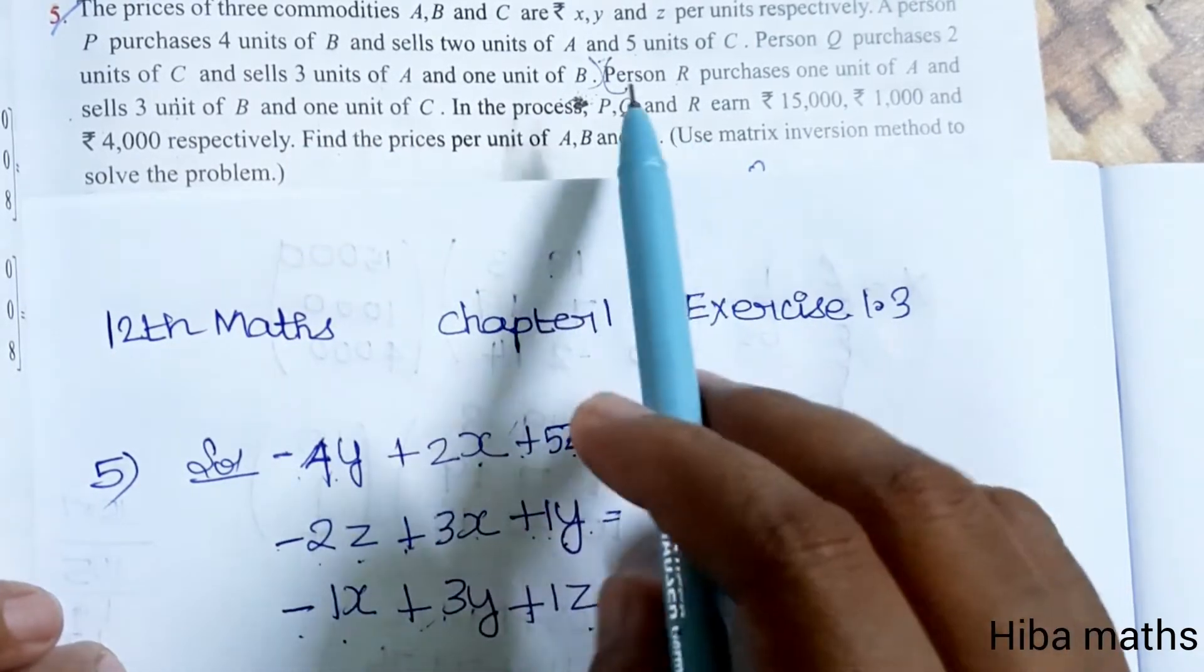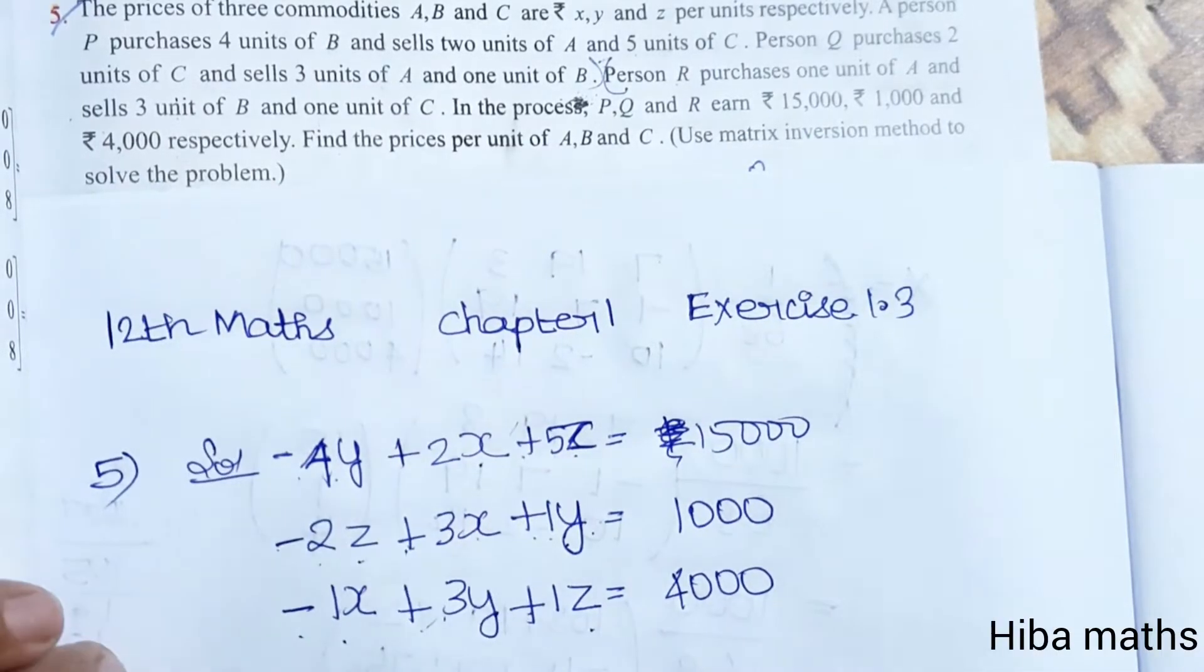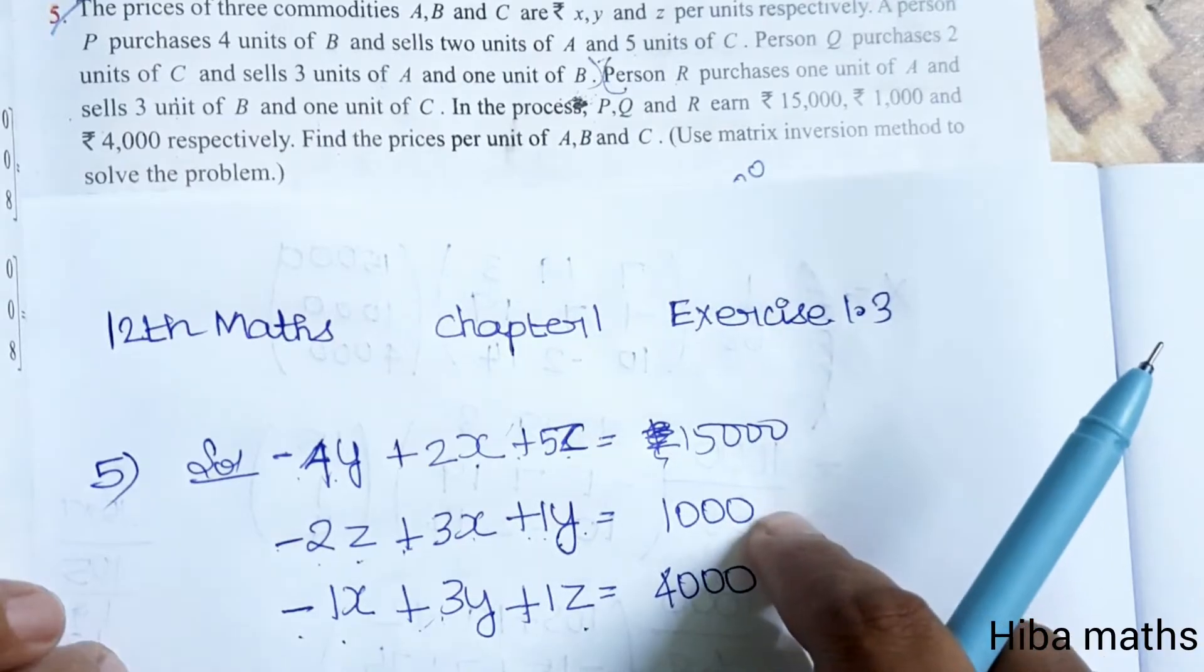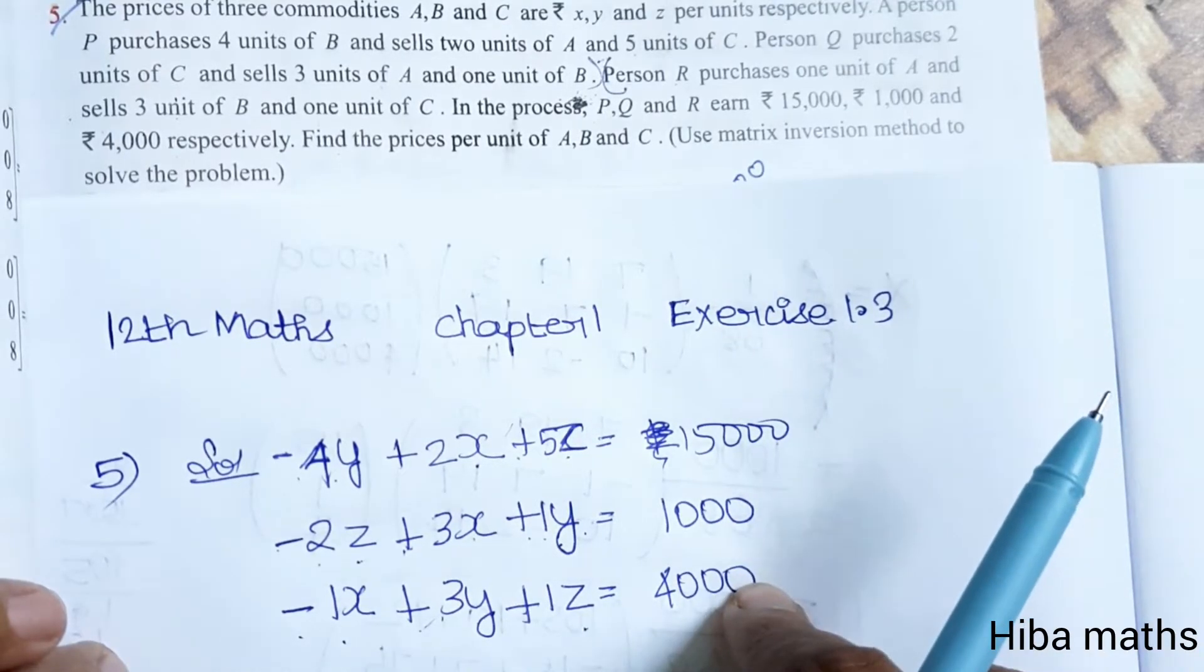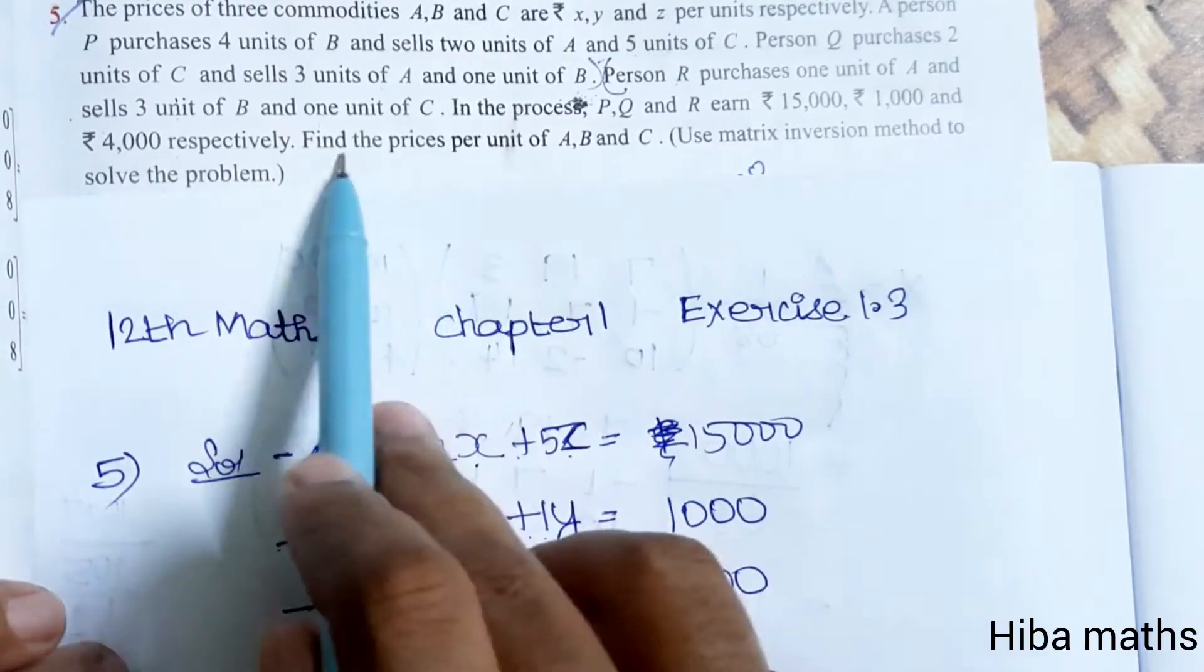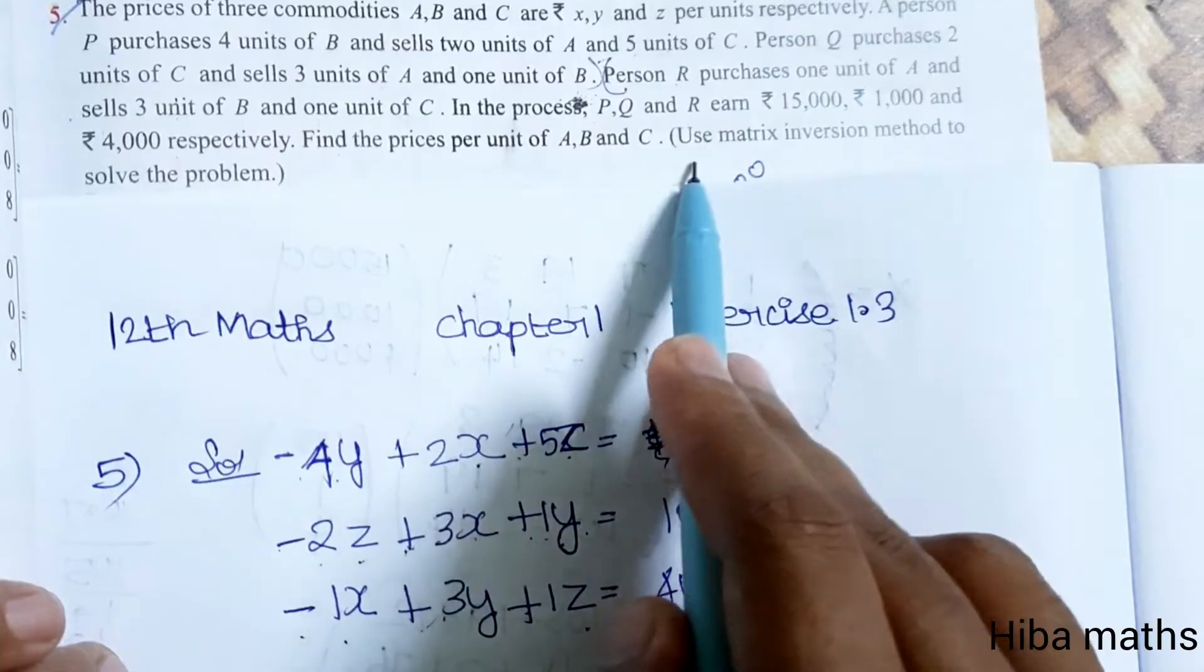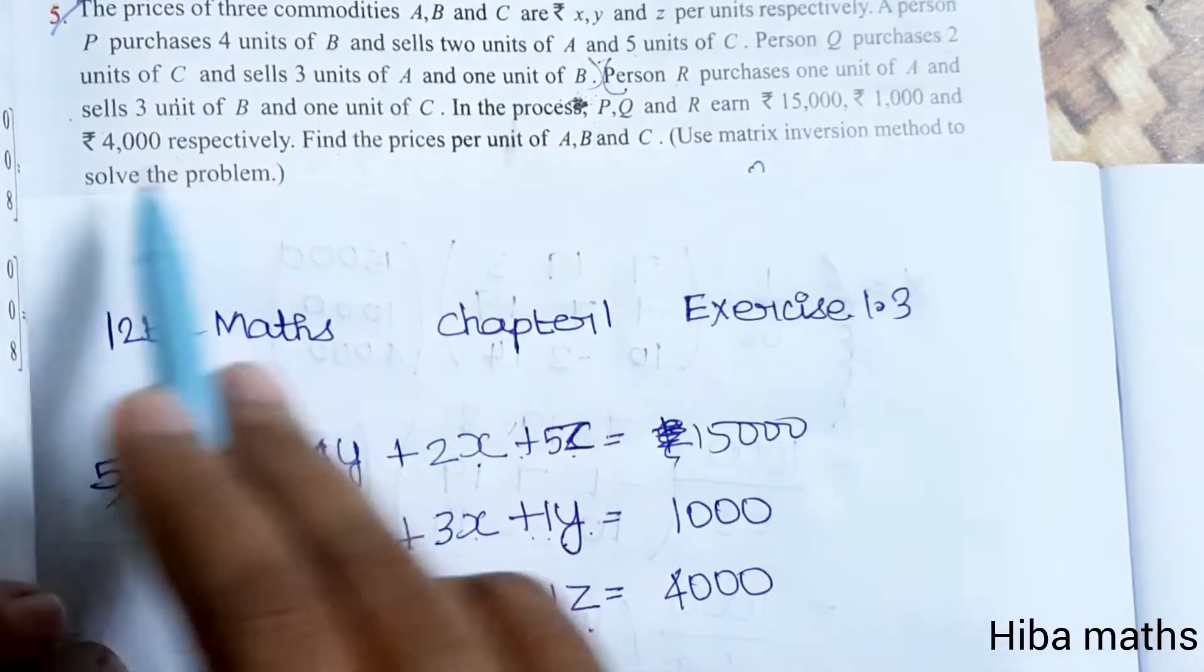In this process, P, Q, R earn 15,000, 1,000, and 4,000 respectively. Find the prices per unit of A, B, C using matrix inversion method to solve the problem.